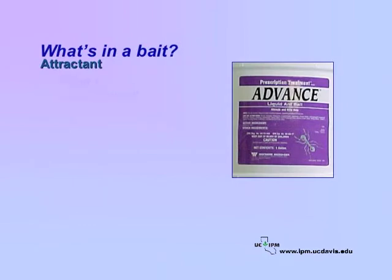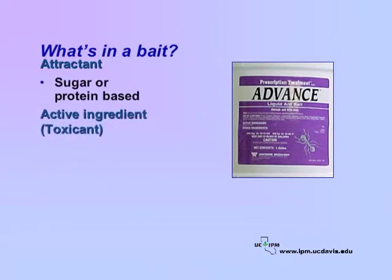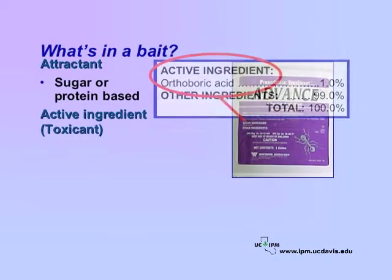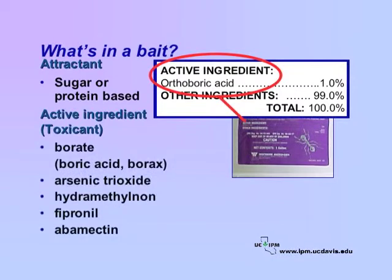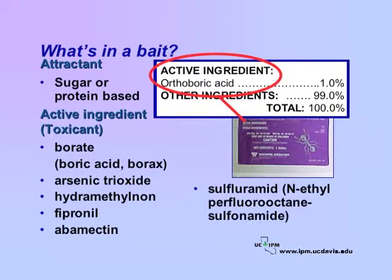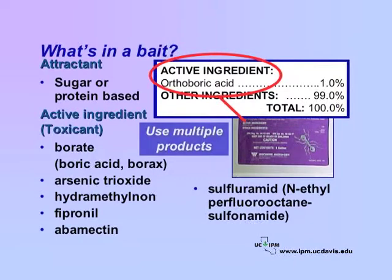Ant baits contain either a sugar- or protein-based attractant, along with the active ingredient, or toxicant. Look for the active ingredient listed on the label on bait products. Common active ingredients include borate, arsenic trioxide, hydromethanone, fipronil, abamectin, and sulfurimid.